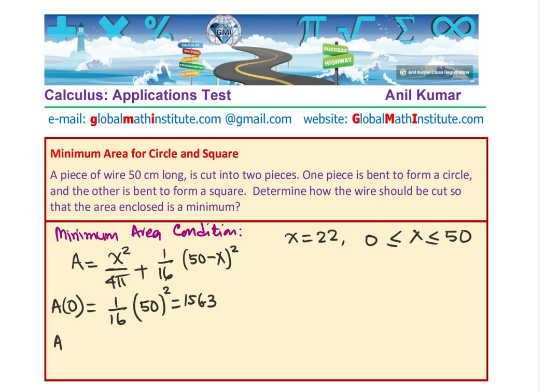Let us also find the area when x is 50. That means if we just make a circle with the whole wire. So it will be 50 square over 4 pi. That will be 50 square divided by 4 times pi. It gives you approximately equal to 199.